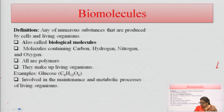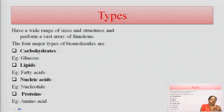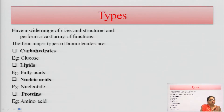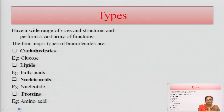Basically, these are of four types: carbohydrate, lipids, nucleic acid, and proteins. These biomolecules have a wide range of sizes and structures and they perform a vast array of functions. They have different types of functions in their structures.